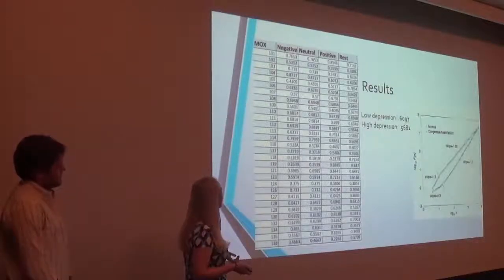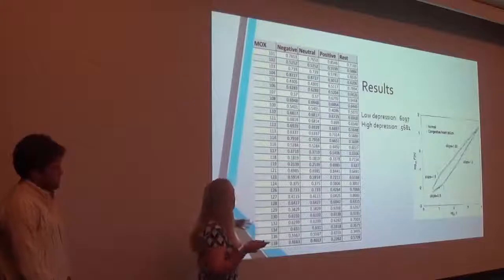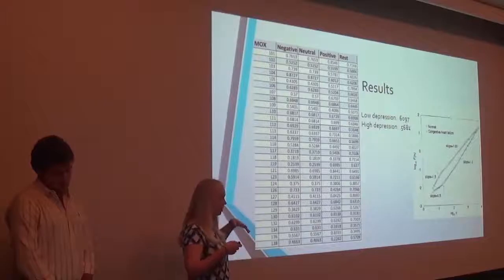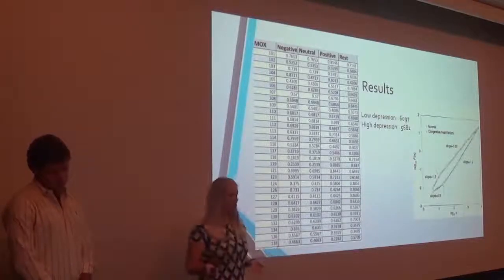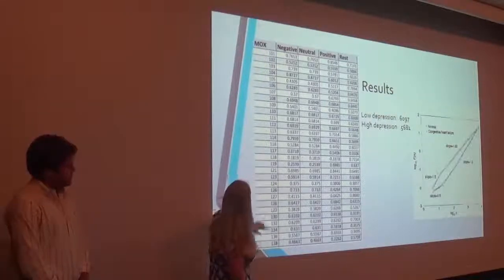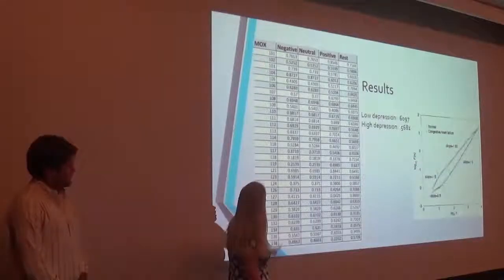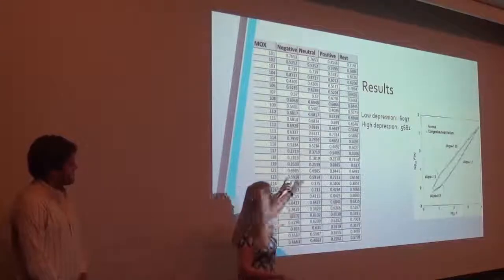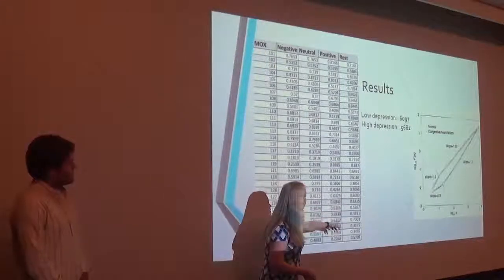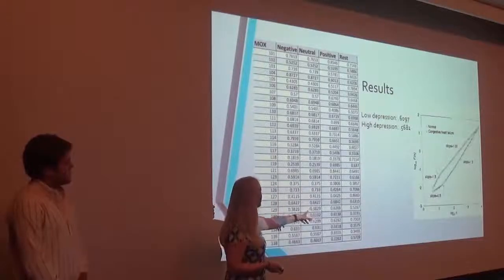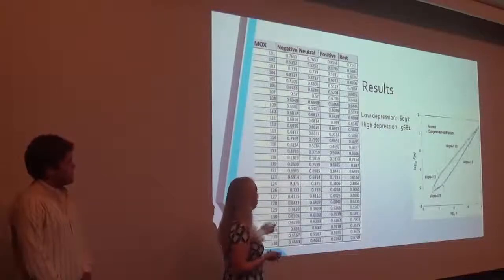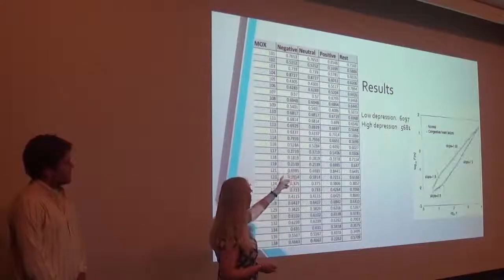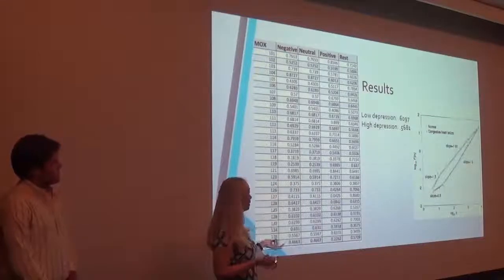So then what we did is after filtering the data and then after parsing it into the negative, neutral, positive stimulus, we ran code to do this detrended fluctuation analysis for Dr. Steinmetz's group. So these are our results. You see the participant numbers right here. And then this is the slope for all of the EKG signals that correspond to that negative stimulus, and then the neutral, positive, and rest.